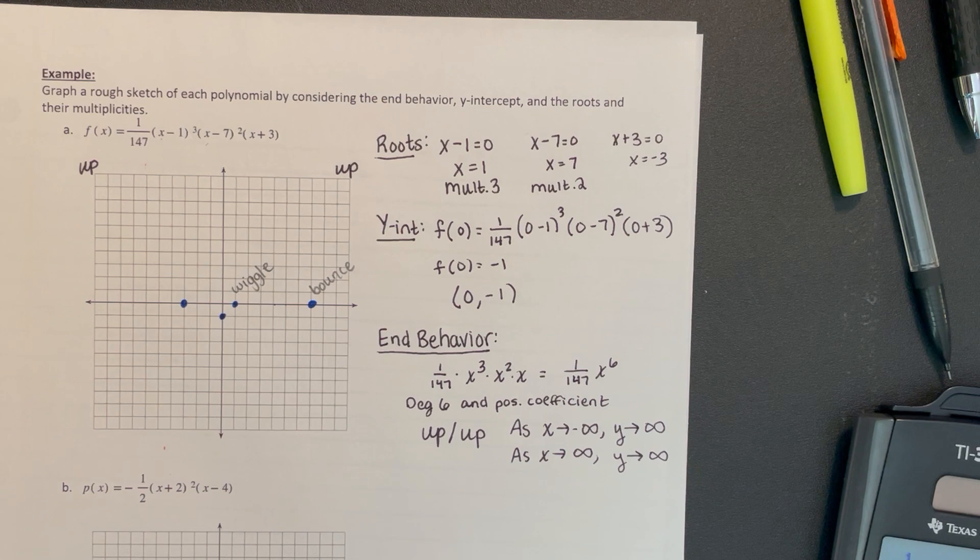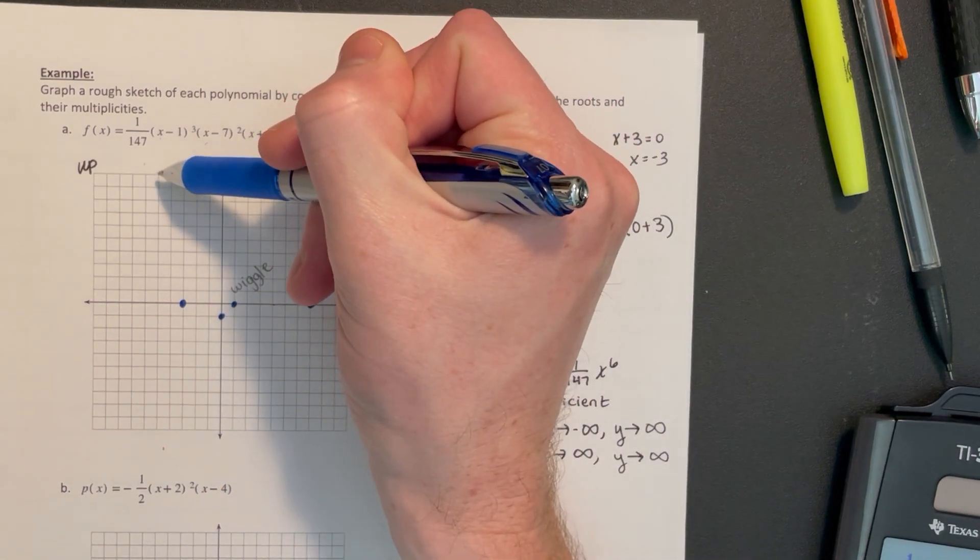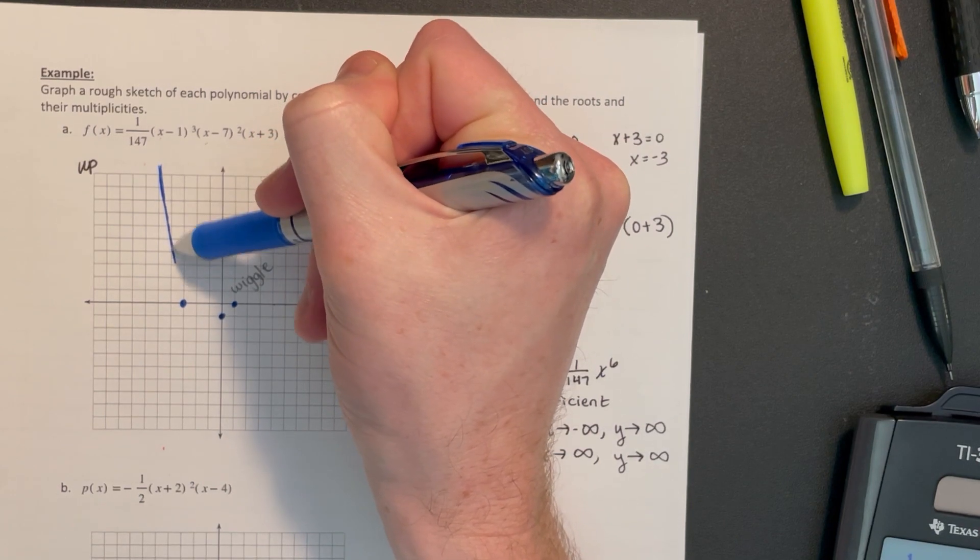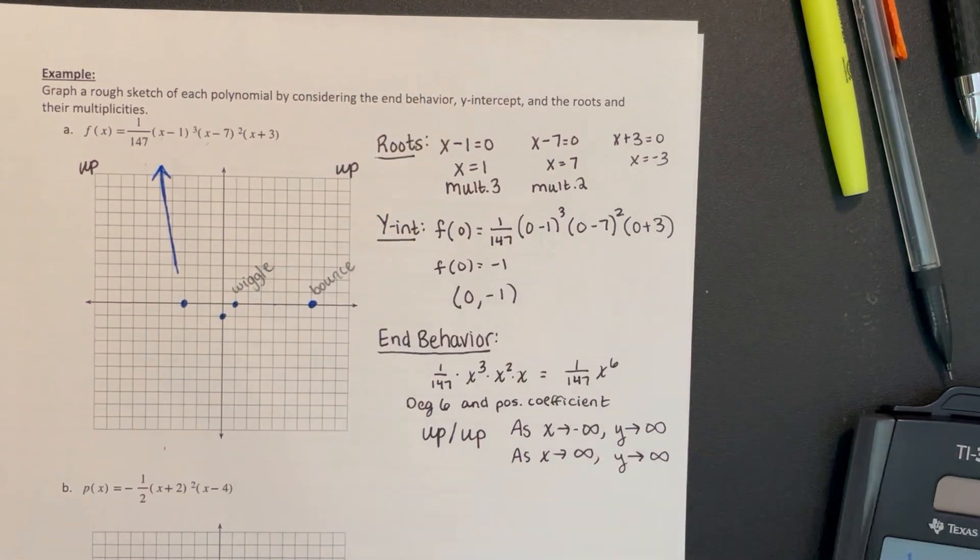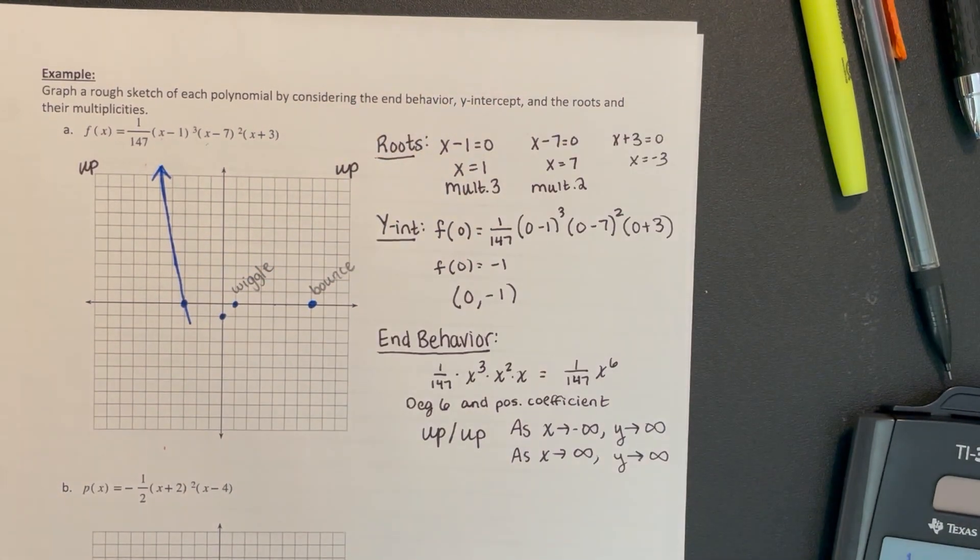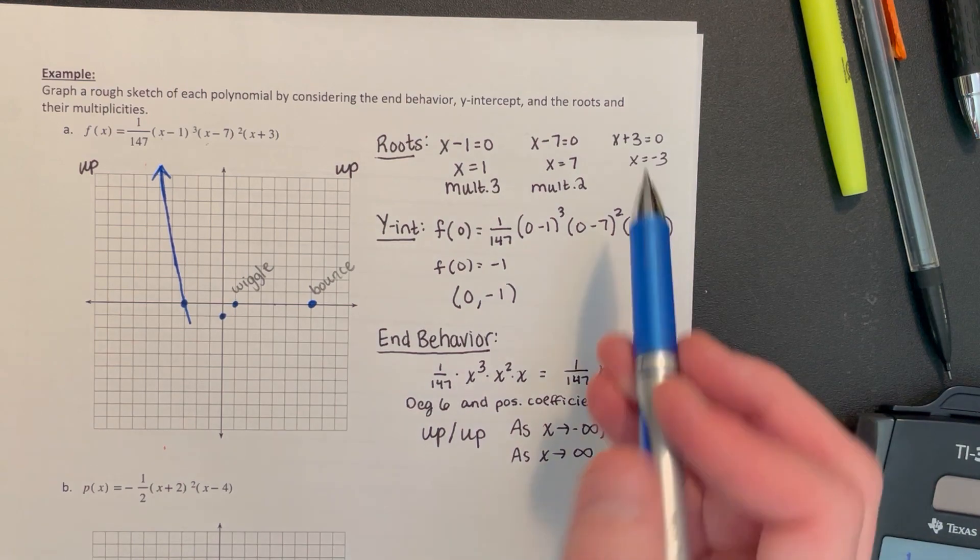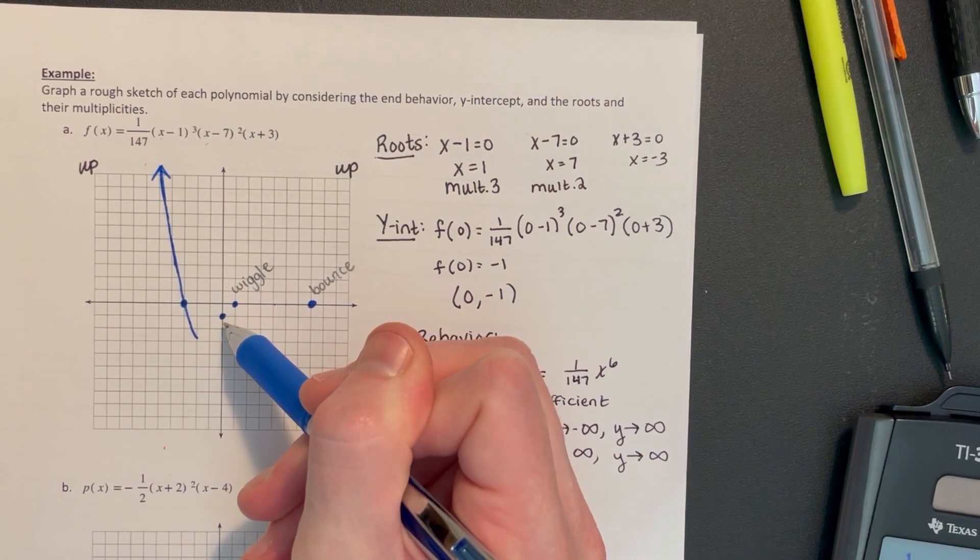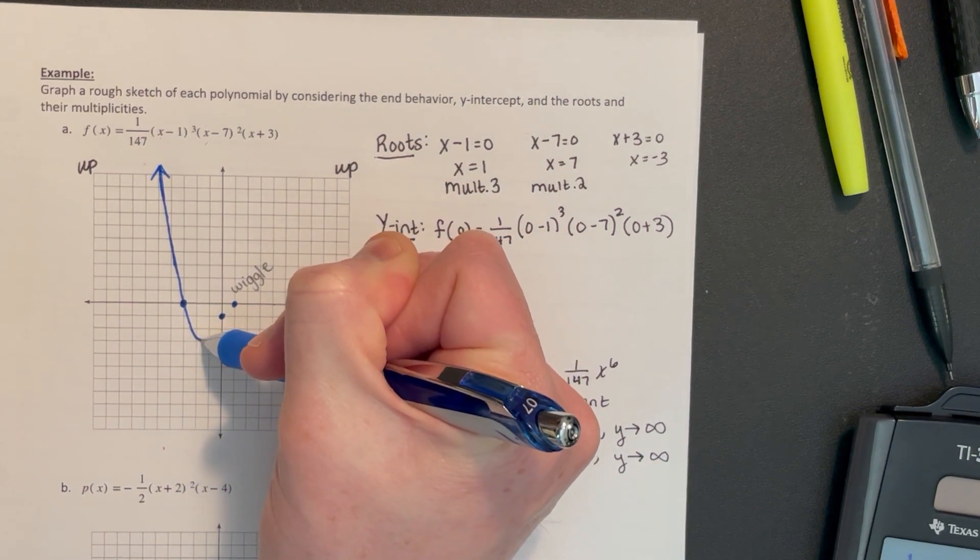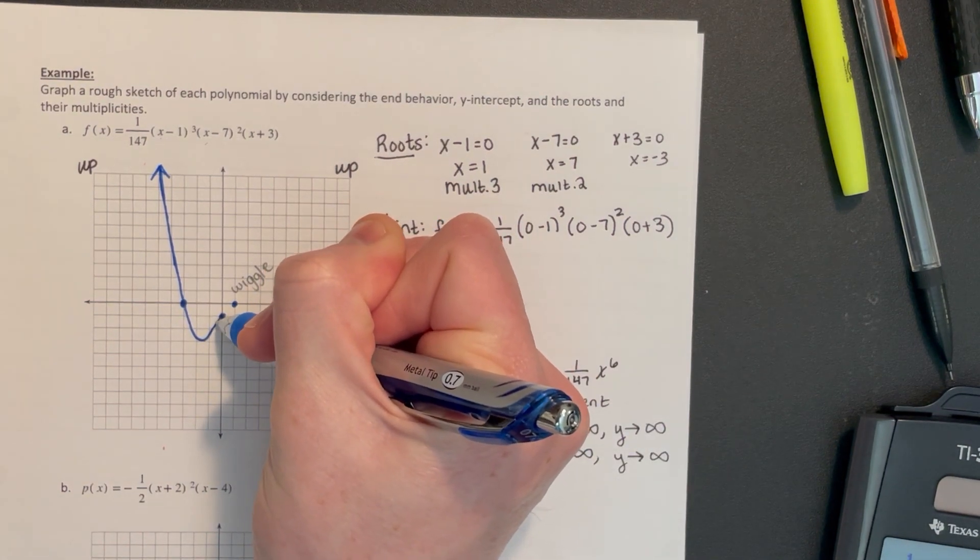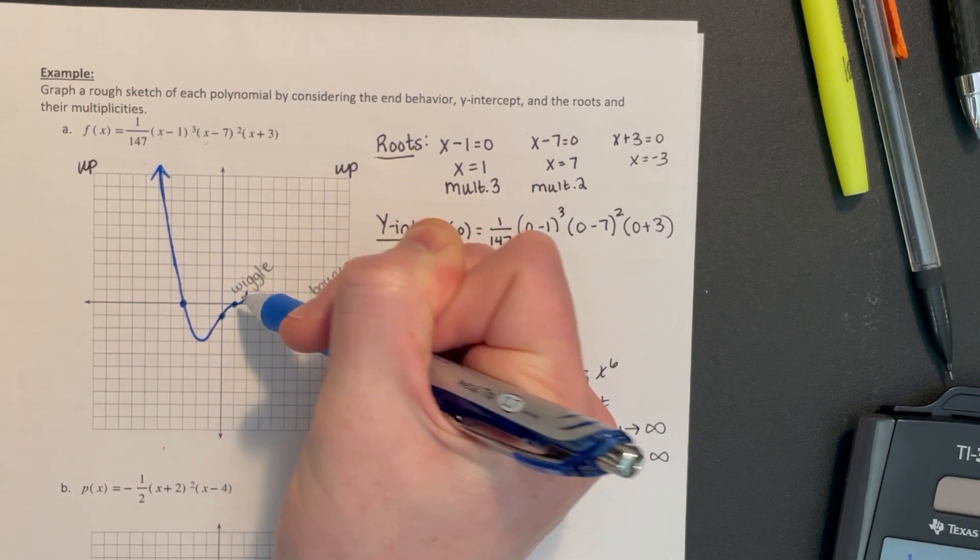Those are the only points we know, which are not a lot, but it is enough based off the multiplicities and the end behavior. I know it should be coming from the positive up direction. So I'm going to start going that way and work towards that x-intercept. Our polynomial would be pointing up, but as we approach -3, we're going to go through the x-axis. It was multiplicity 1, so it's just going to go straight through. At some point, we need to turn because I need to go through this y-intercept. It's going to turn at some point and go up through the y-intercept.